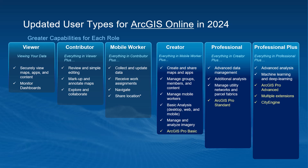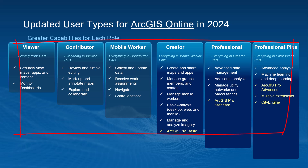So where are we moving to now? Well, we'll be flipping to only six user types, which are viewer, contributor, mobile worker, creator, professional, and professional plus. The specifications for each of these can be seen here, with the ones highlighted in yellow being the new ones.